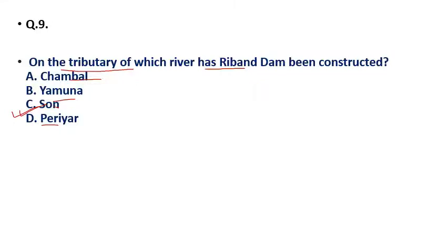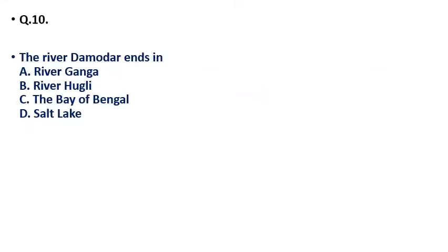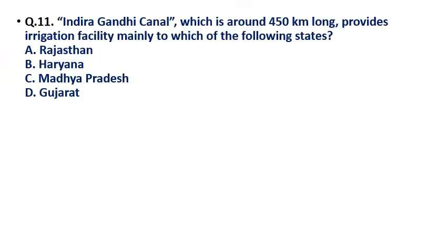Question 10: The river Damodar ends in — (a) River Ganga, (b) River Hooghly, (c) the Bay of Bengal, (d) Salt Lake? The correct answer is River Hooghly. All these questions are from previous year papers and have been asked many times — they will be asked in future exams too. Please make notes of these questions as they will be very helpful for your exam.